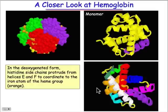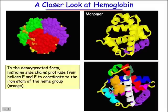Spinning it around a little more, you can see the five-membered ring of the imidazole coming from the histidine on this white alpha helix and how, on either side, it comes together to pin the porphyrin molecule in place.